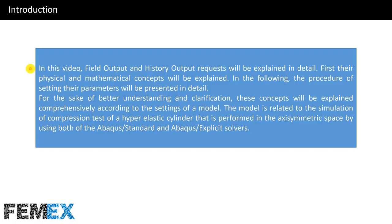In this video, field output and history output requests will be explained in detail. First, their physical and mathematical concepts will be explained. In the following, the procedure of setting their parameters will be presented in detail. For the sake of better understanding and clarification, these concepts will be explained comprehensively according to the settings of a model.